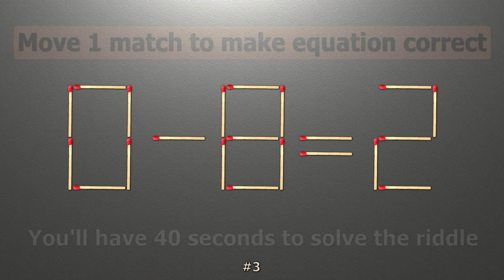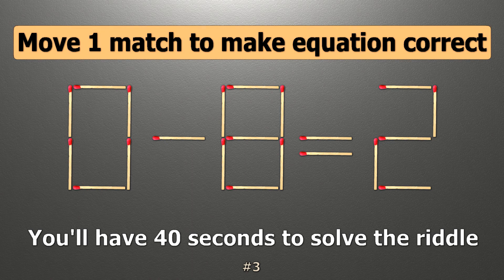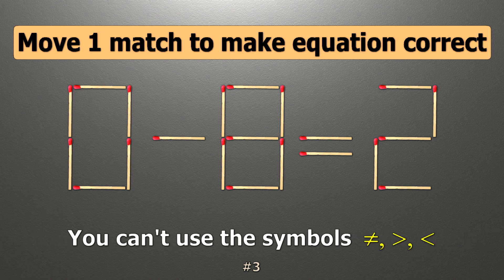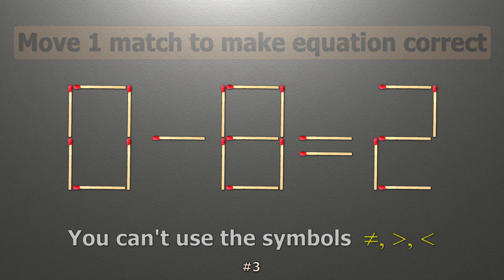We have the equality 0 minus 8 equals 2. Our equality is wrong. We need to move one match to make our equality correct.